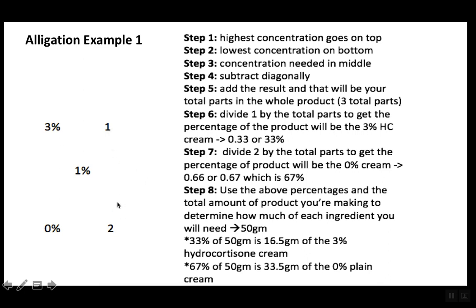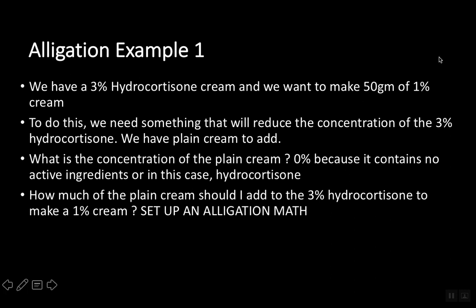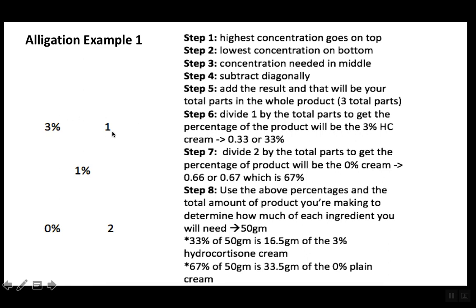Next, you add these two numbers: 1 plus 2 equals 3. This 3 means there are 3 total parts in the whole preparation. Sometimes people get confused with what 'parts' means — parts is just saying divide by this number. Our total that we want to make is 50 grams. If the total parts of the whole 50 grams is 3, it means if you divide 50 grams by 3, you get equal portions. For example, 50 grams divided into 2 parts means each part is 25 grams. That's all parts mean.